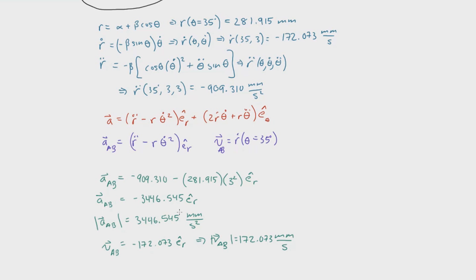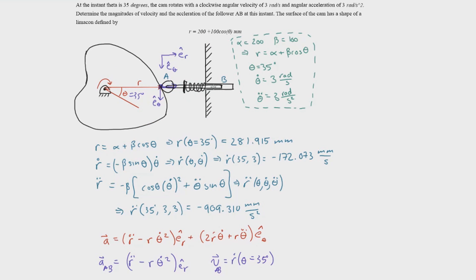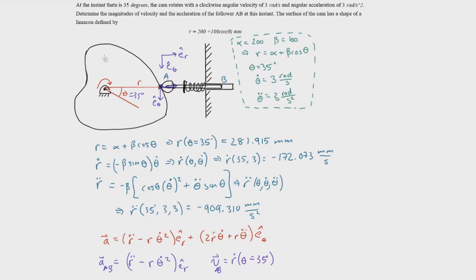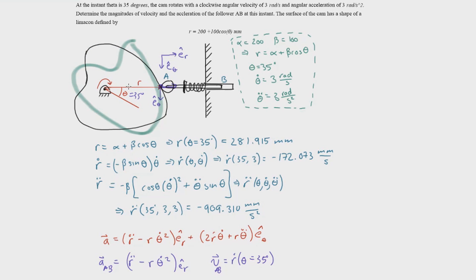To recap: since we needed the velocity and acceleration of AB, we used the equation for R to find those quantities at any given instant with respect to theta. We took time derivatives of R to find r, r-dot, and r-double-dot. We also noted that this equation is rotating with time, so the length R is the key quantity that determines the acceleration and velocity of AB. As the r vector changes with time, so does the follower AB.